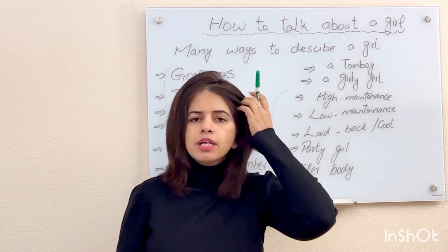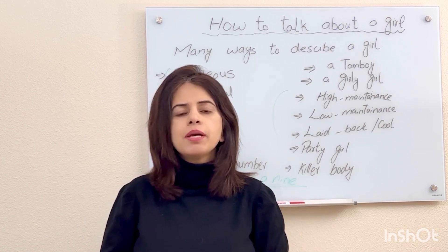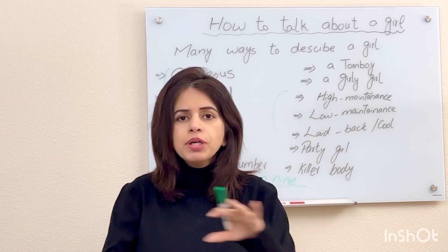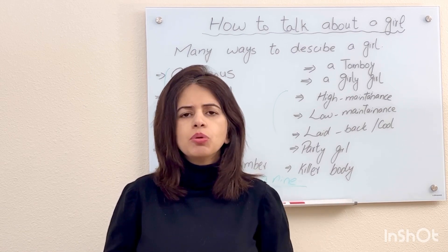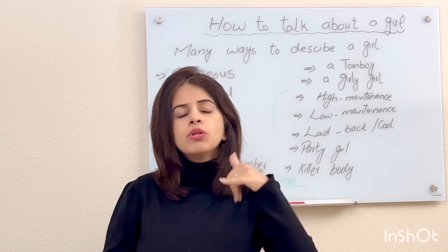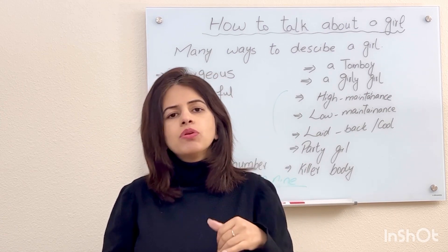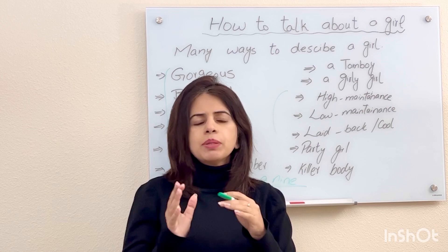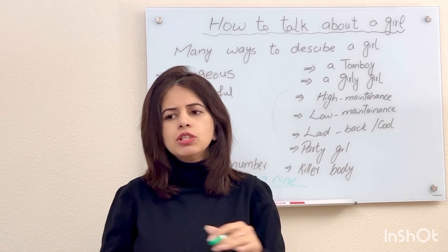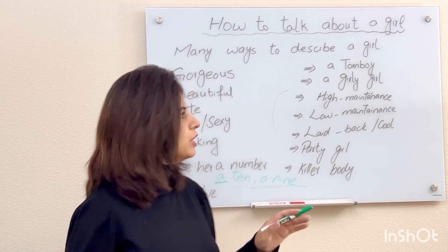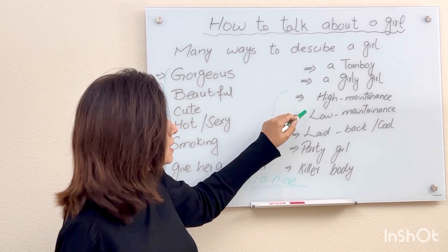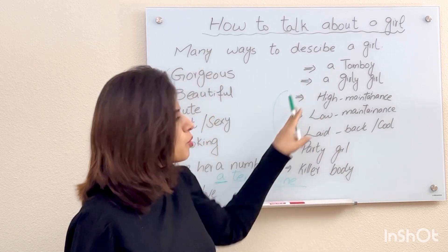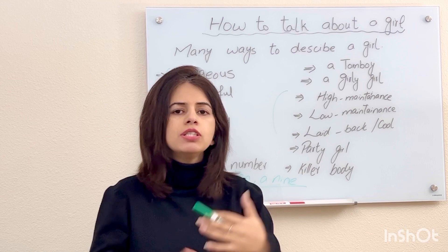Some girls are low-maintenance girls. They are very easy-going and cool. You don't need to call her 24 hours. If you give her a little attention, she is fine with that because she doesn't need a lot of money or constant attention. This kind of relationship is easy to manage. You need to have an idea of which girl is high-maintenance and which is low-maintenance.